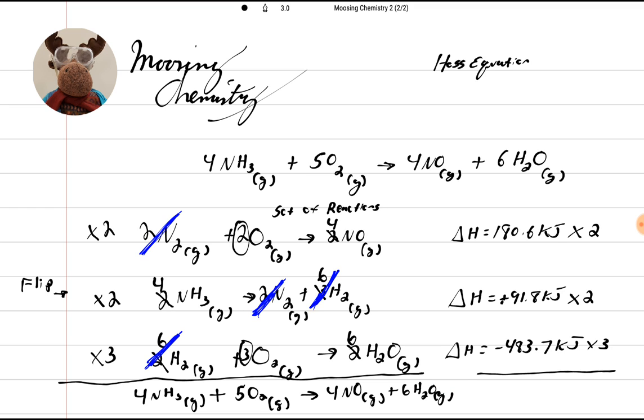And look at that, guys. We put that equation back together. Now, let's figure out what our delta H value is. Let's figure out what enthalpy is. And let's figure if this is an endothermic or exothermic reaction. So we take our first delta H, we go 180.6 times 2. That gives me 361.2.